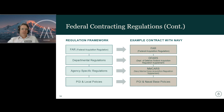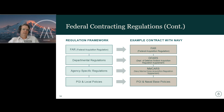Putting it all together, here's what an example looks like. A contract with the Navy would be governed by the FAR, by DFARS, and then by NMCARS, along with all applicable PGI and naval base policies. Contractors are required to comply with all the regulations and contract clauses contained in their contract, and the DCAA can audit really any of these requirements.